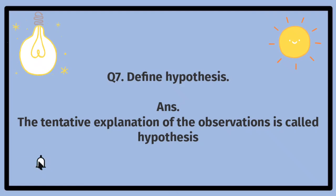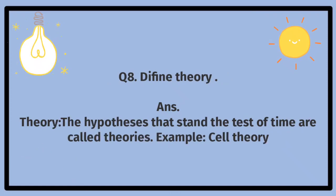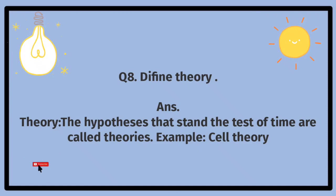Define hypothesis. The tentative explanation of the observations is called hypothesis. Define theory. The hypotheses that stand the test of time are called theories. Example: cell theory. Nazariya ki wazahat karein. Wo maafroog jo waqt ki kasoti par khare hote hain nazariyat kehlate hain. Misal: cell theory.